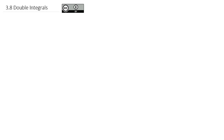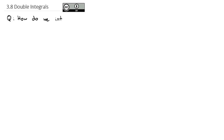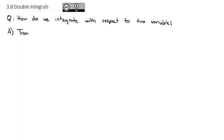Up until this point, we've been integrating with just one variable, either dx or dy. Today we're going to extend that and answer the question: how do we integrate with respect to two variables? This is going to be really similar to when we did partial derivatives, just in the x direction or just in the y direction. Just as we treated the other variable like a constant with partial derivatives, we're going to do the same thing with two variables.